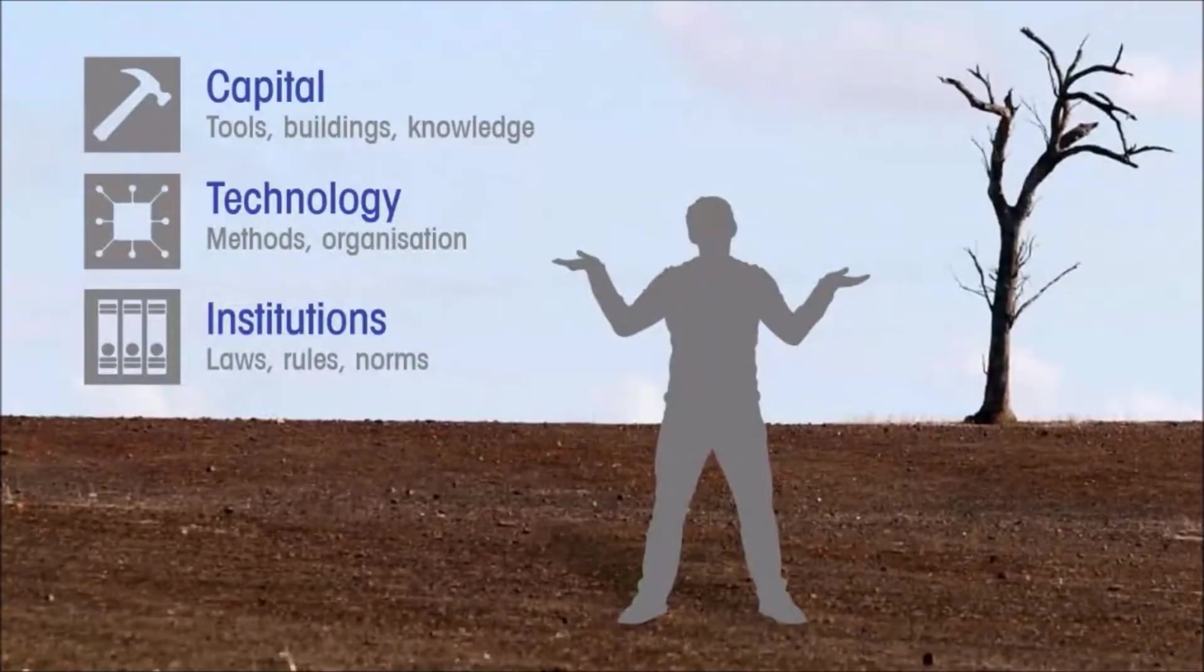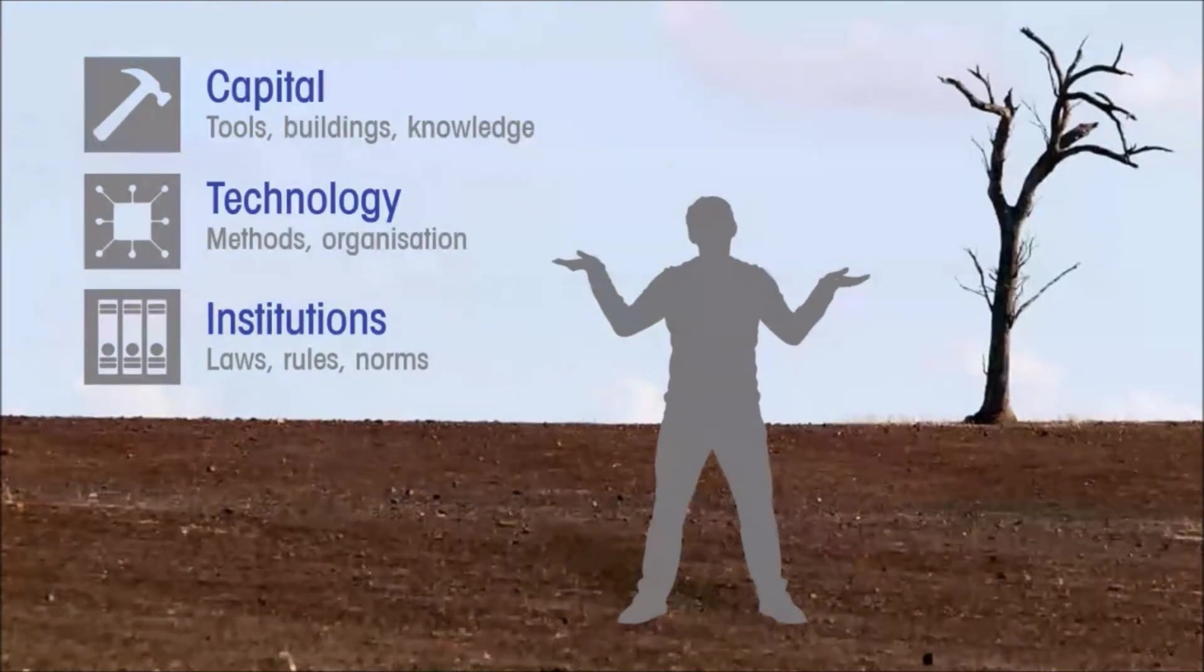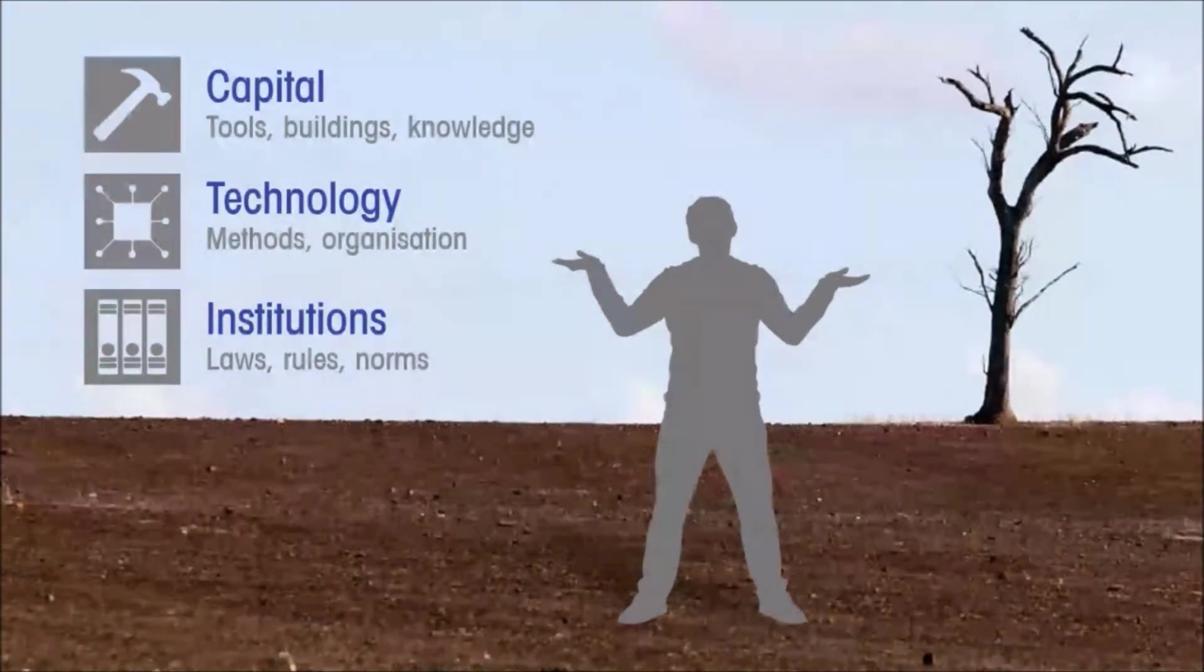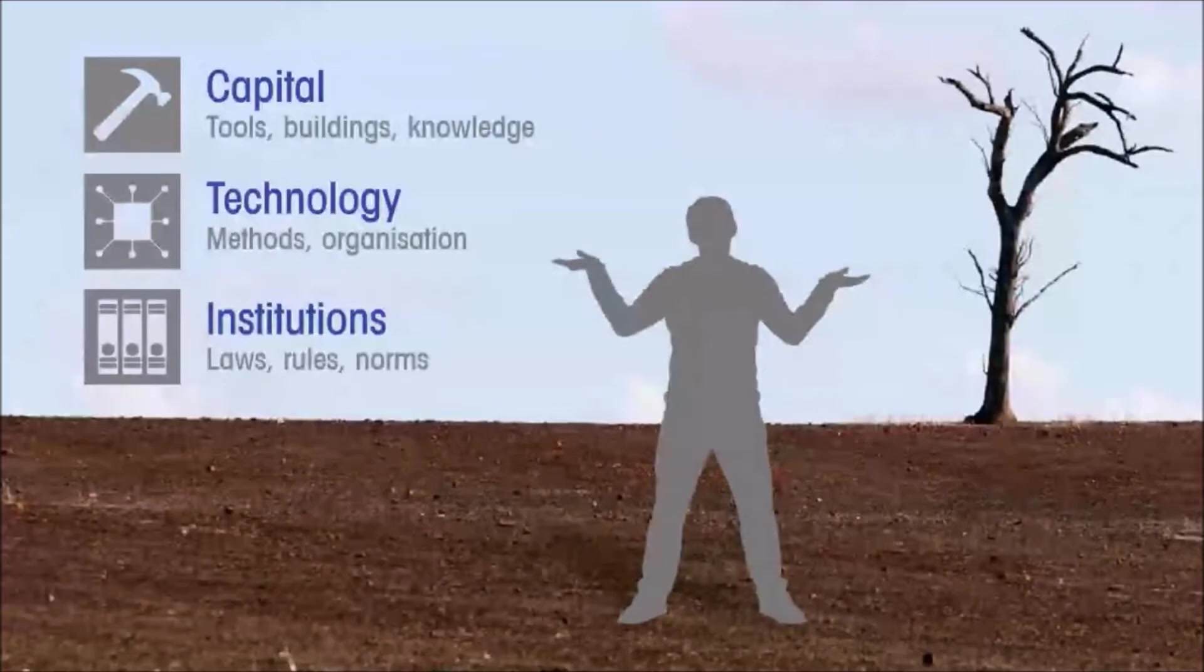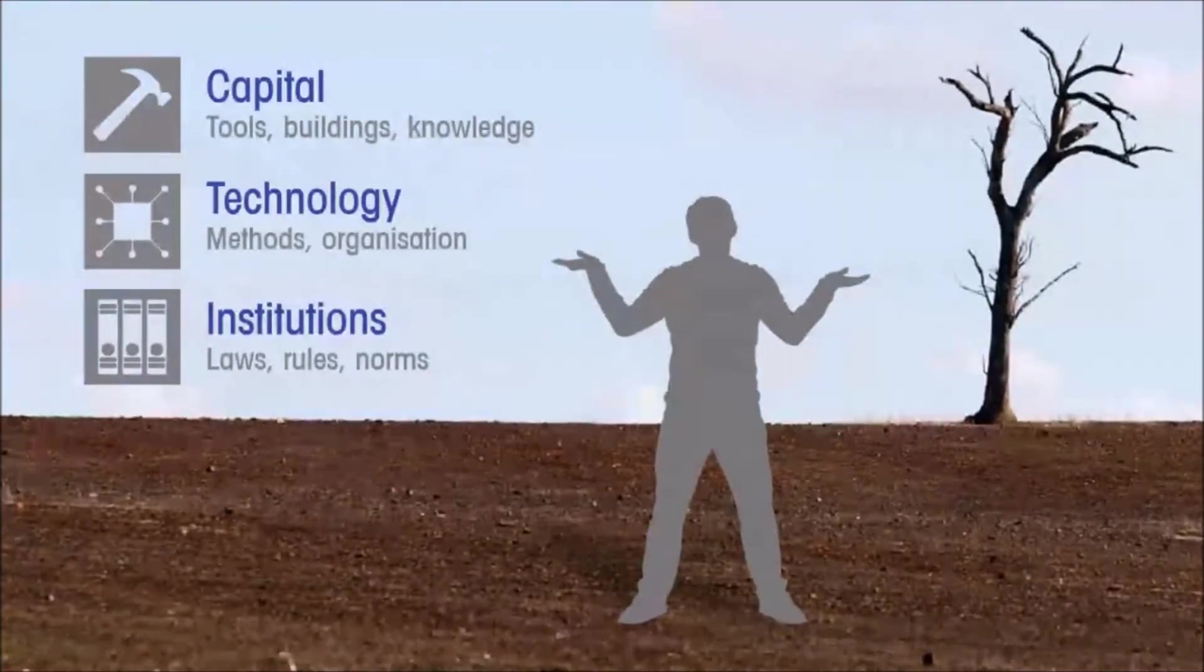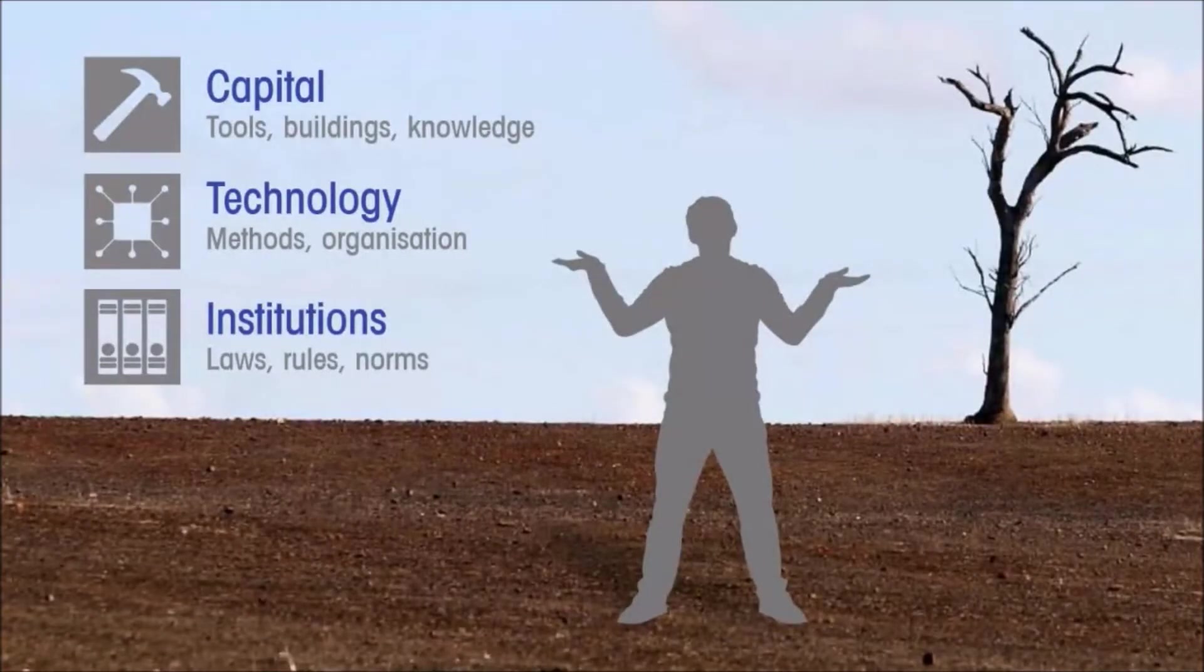The building blocks of a country's productive capacity and therefore ultimately its level of output are the amount of capital it has, the level of its technology and the productivity of its institutions. These are the elements that we're going to build into the economic model.